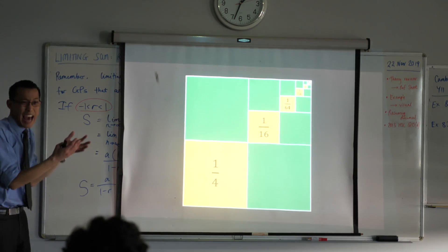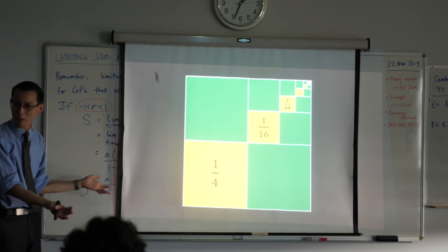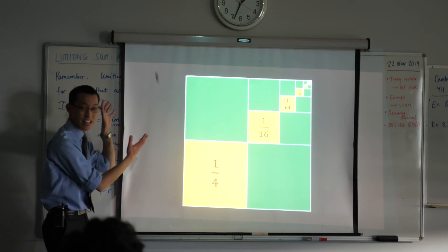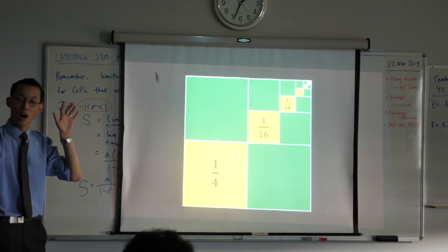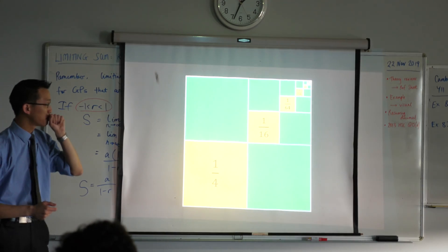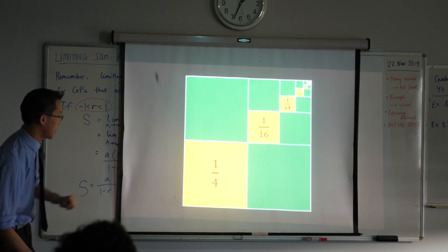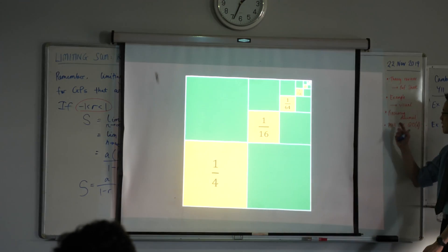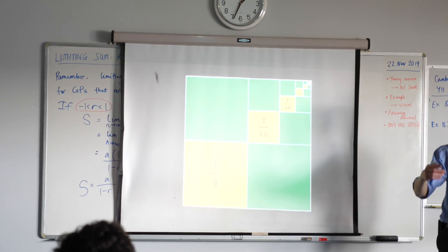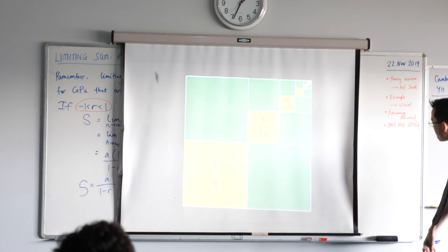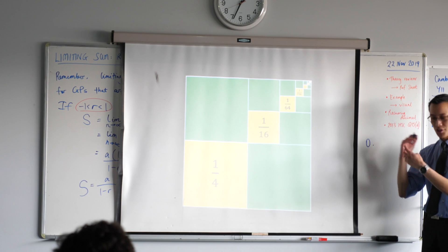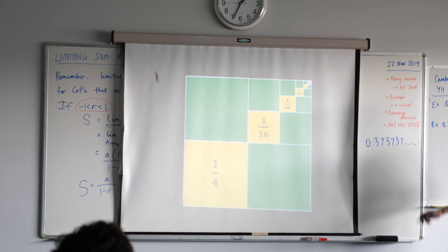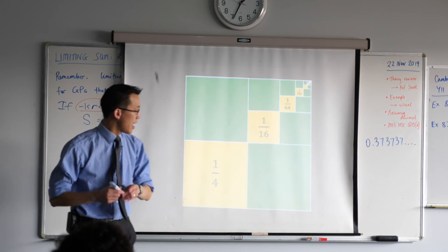Are you getting a sense for why we should have expected one third all the way from the beginning? So if you want, you may like to draw this — that's just a visual representation of the limiting sum that you just calculated. Now, I want to see if you can take this and apply it to something you learned like four or five years ago. I want us to see if we can take this idea of a limiting sum and apply it to this.